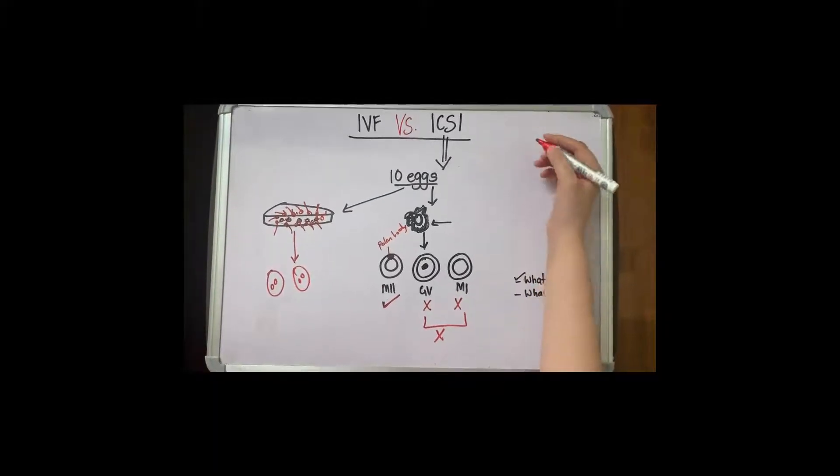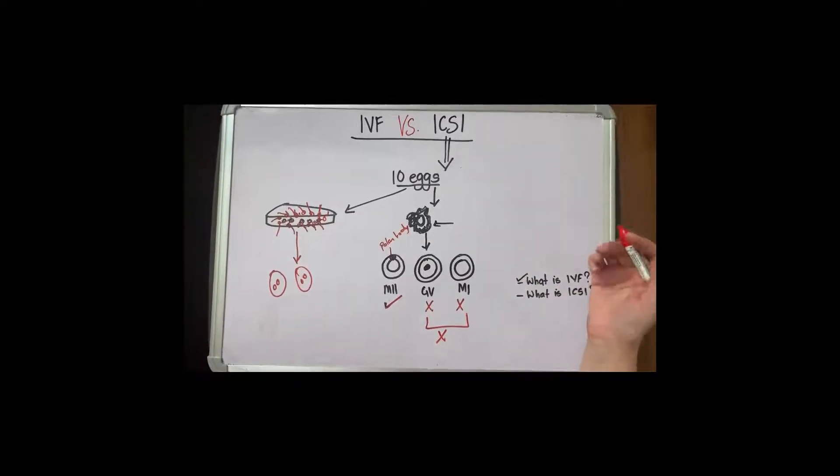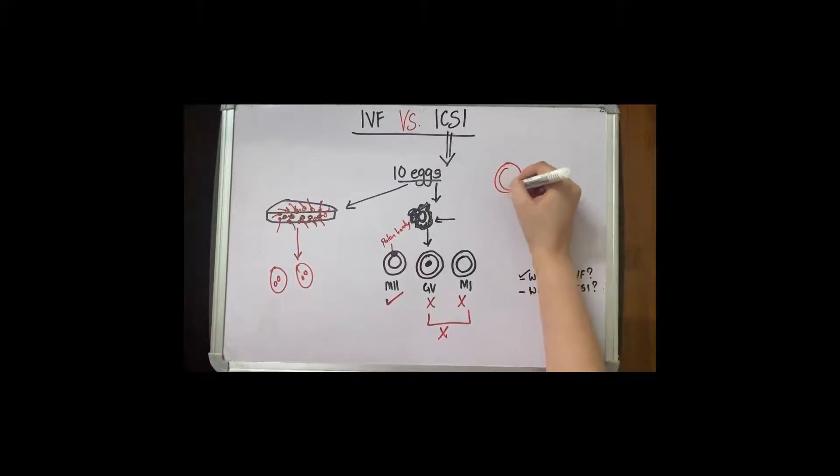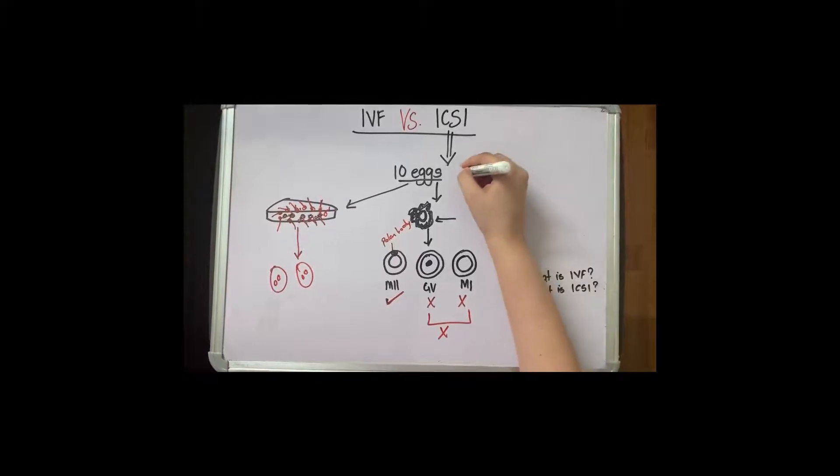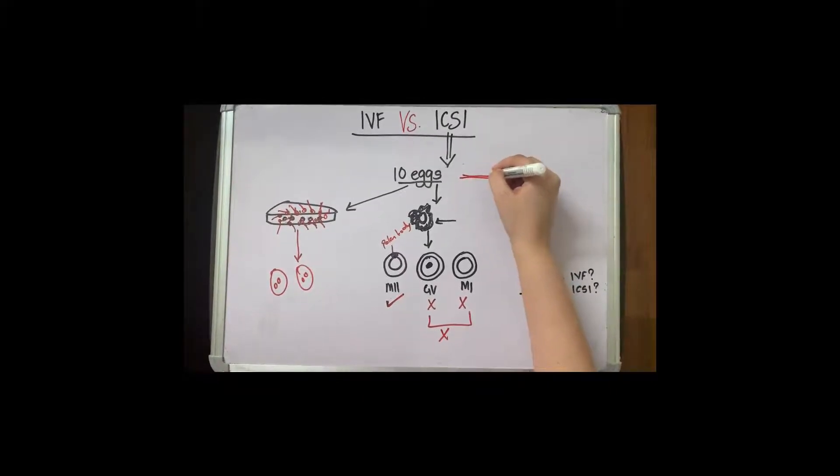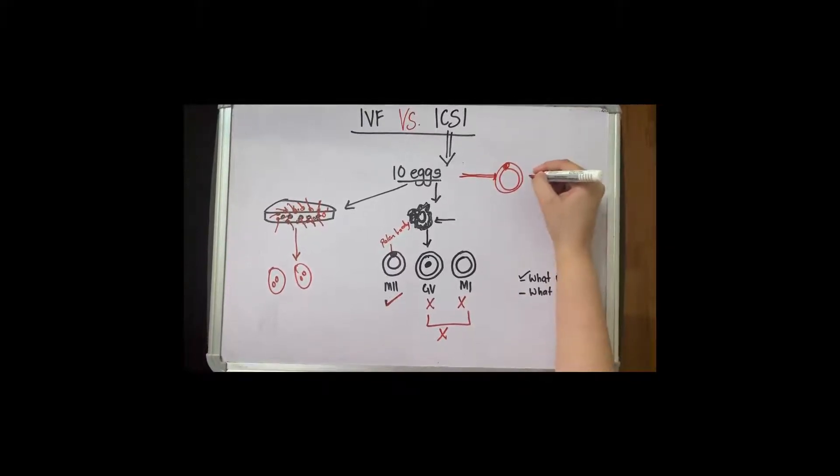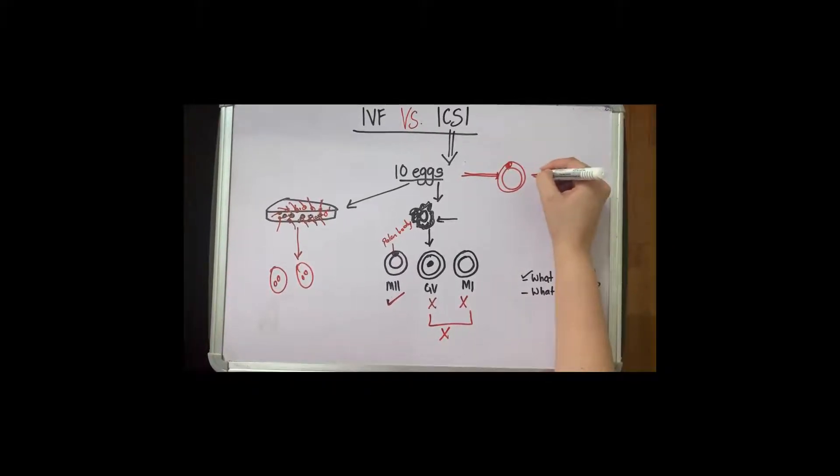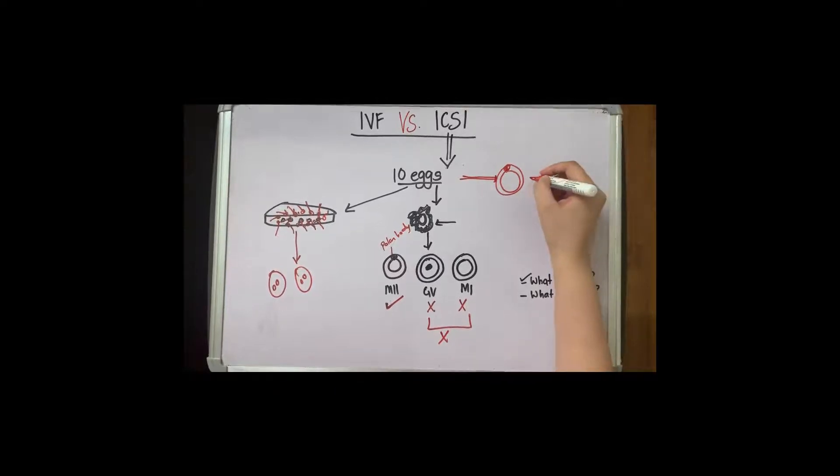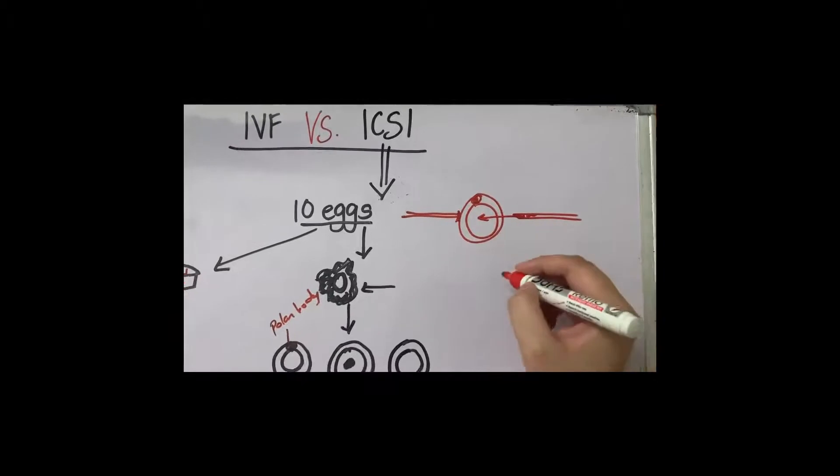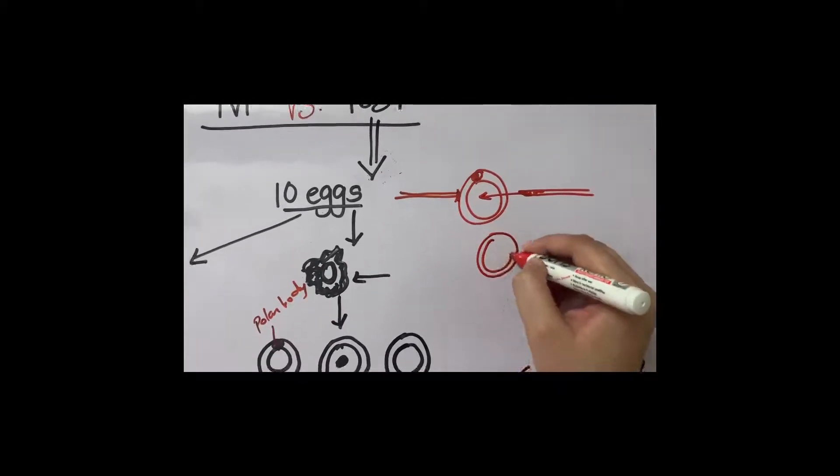These M2, what happens is under a machine which we call the micromanipulator, each egg is held with a very tiny needle which cannot be seen with the naked eye under the microscope. Here each sperm, like one sperm, is selected from the millions that are available and it is injected one by one into the oocyte.